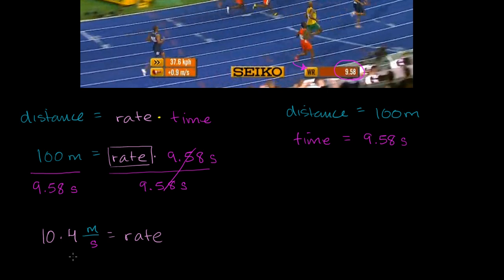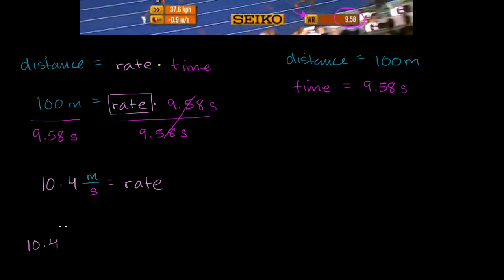Now the next question: we've got this in meters per second, but unfortunately when we drive a car, we don't see the speedometer in meters per second — we see either kilometers per hour or miles per hour. So the next task is to express this speed in terms of kilometers per hour. Let's take it step by step. I'll start with 10.4 meters per second, and let's first think about it in terms of kilometers per second.